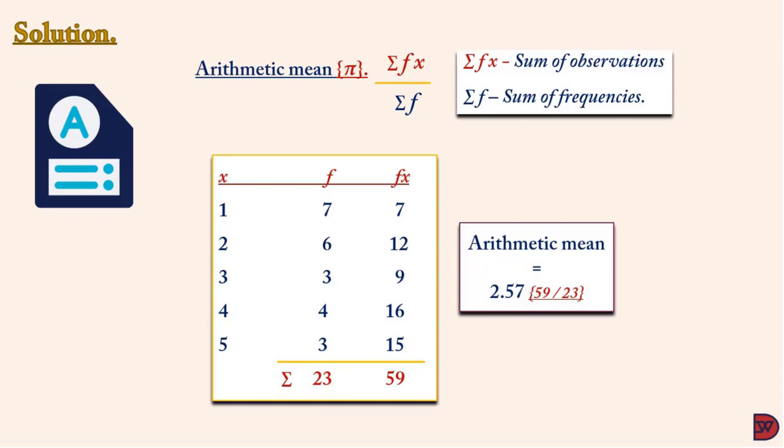Therefore, the arithmetic mean is 2.57, which is the sum of the total frequency (59) divided by the sum of the frequency (23).